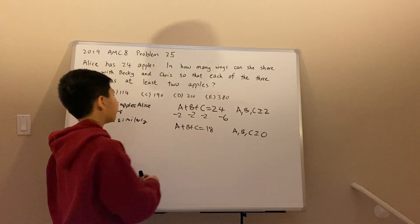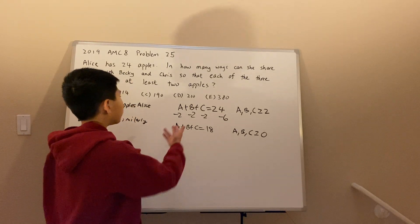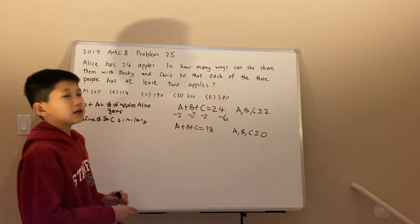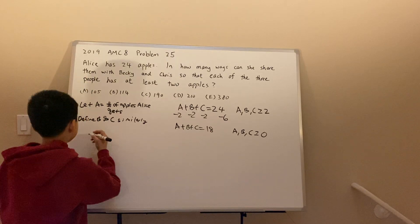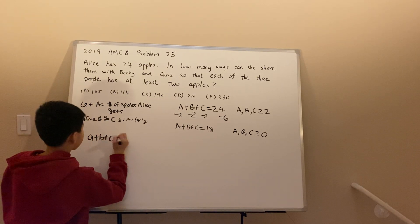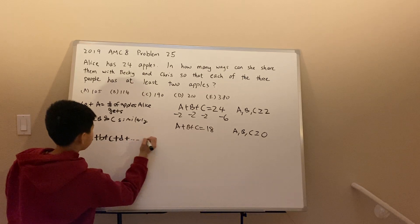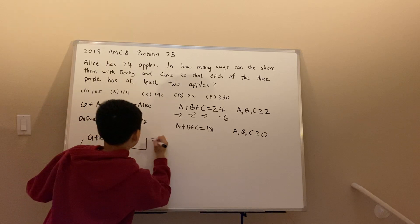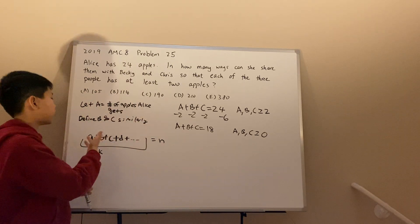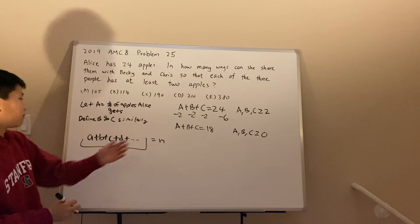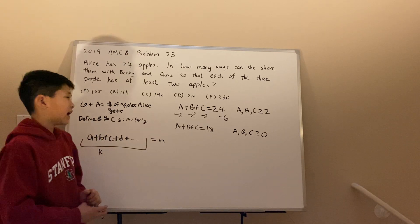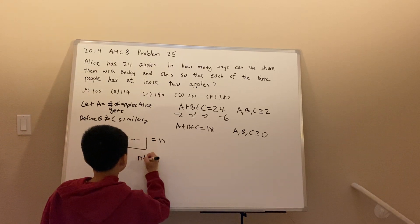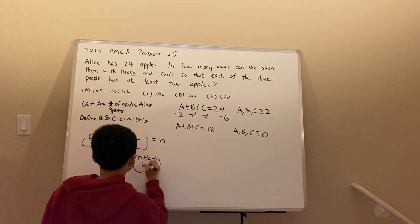Now we can focus on solving the problem. This seems like a classic stars and bars problem. Stars and bars finds the number of non-negative solutions to an equation. The formula for finding the number of solutions is n plus k minus 1 choose k minus 1.